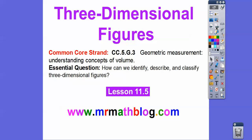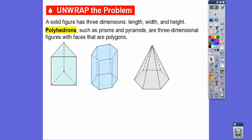So here's our common core strand for our teachers, and our question is: how can we identify, describe, and classify three-dimensional figures? So far we've been dealing with two-dimensional figures of polygons. Here we have polyhedrons — solid figures that have three dimensions with length, width, and height. I have these plastic figures in my classroom, and when I'm showing these in geometry class I like to hold them up because it's hard to do it with just pictures.